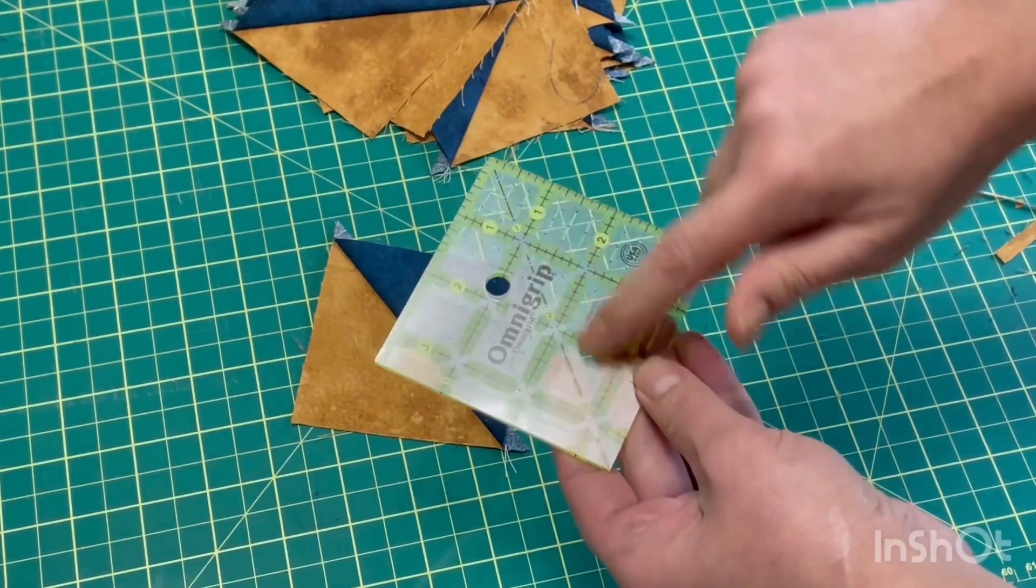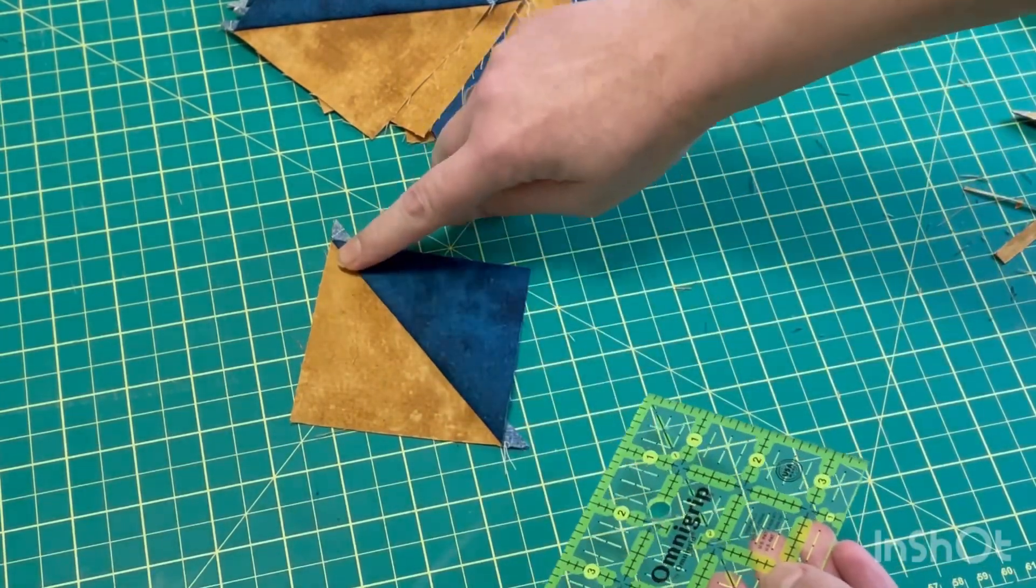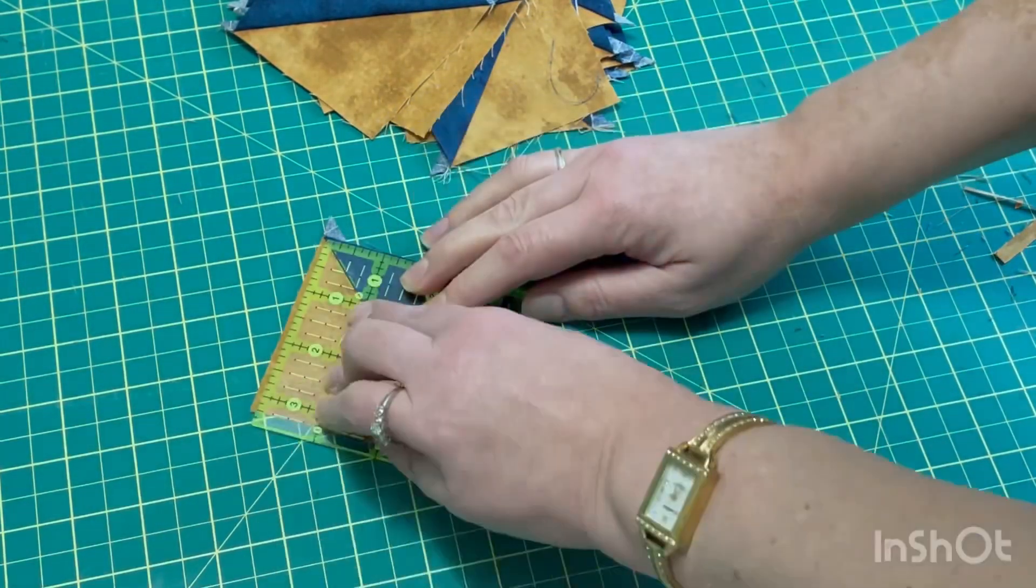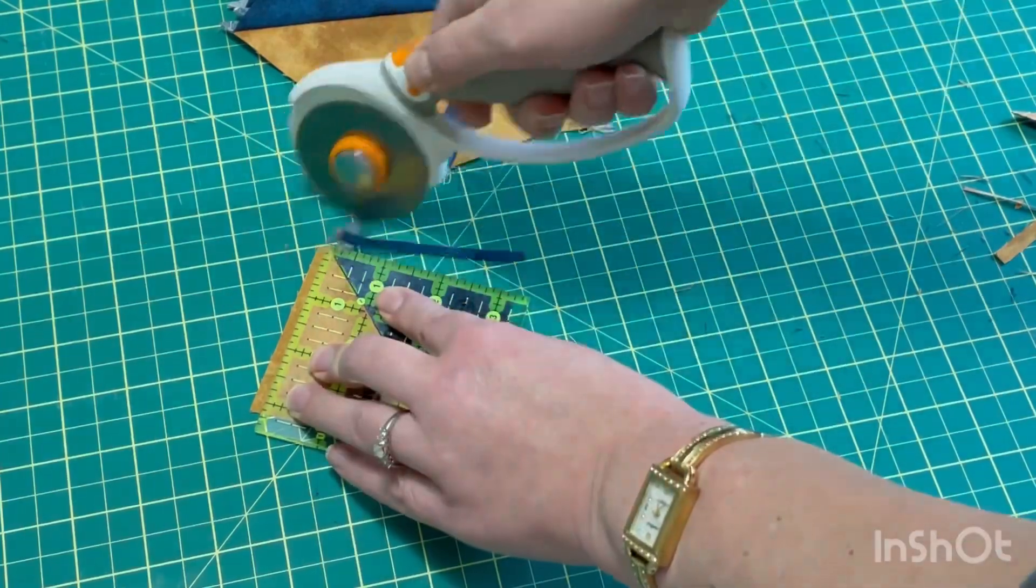And now it's time to trim them all up. I have this diagonal line on my ruler which I'm going to match up with that diagonal line on my block. And then I'm just going to trim all the way around.